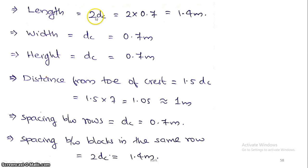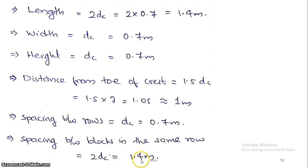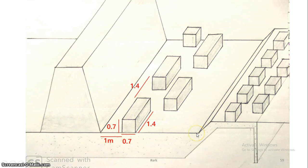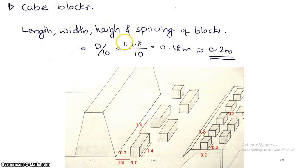Fixing the dimensions: length is 2dc = 2 × 0.7 = 1.4 meters; width is dc = 0.7m; height is dc = 0.7m; toil is 1.5dc = 1.0 meter; spacing between rows is 1.5dc; spacing between blocks is 2dc = 1.4m. For q-blocks: full supply depth is 1.8m, so 0.1D = 0.18m; we provide 0.2m. Spacing is 0.2m.